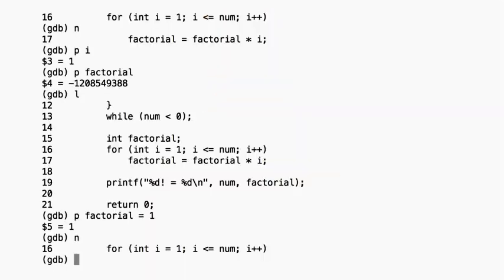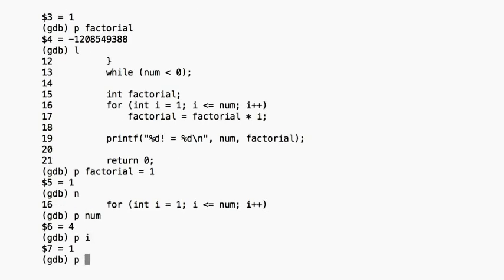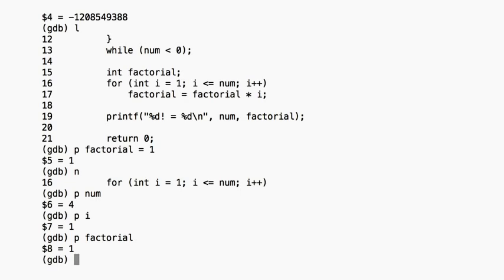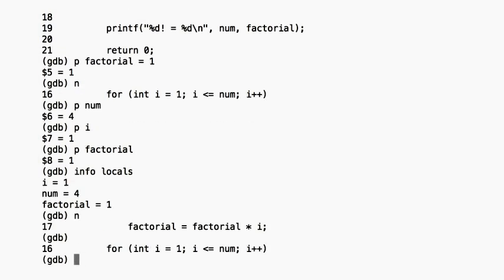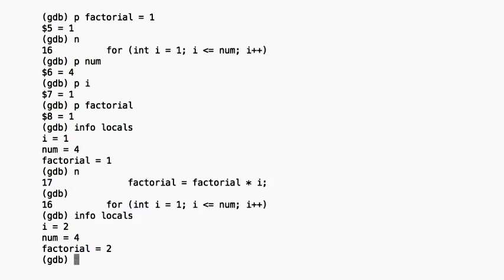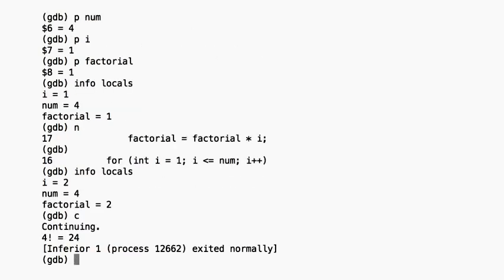Now let's continue our program and make sure everything's where it's supposed to be. num should be 4, i should be 1, and factorial should be 1. We can shortcut this process and print all of our local variables with the super helpful info-locals command, which prints out all of our in-scope local variables. Everything looks good to go. Let's do another go-around of the loop just to make sure — everything looks great. Now we can use the continue command to go to the end. 4! printed out 24, as expected. Now we can go fix this in our code.